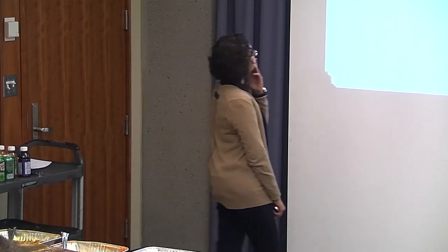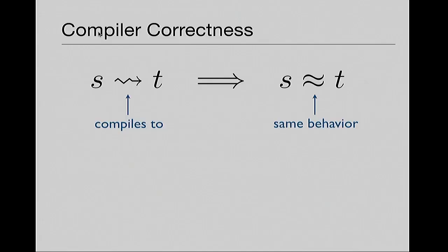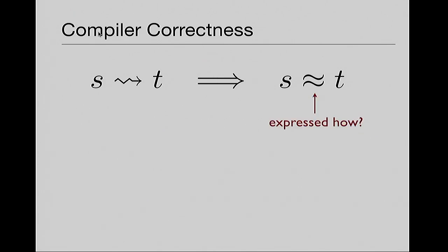So, compiler correctness. Please feel free to interrupt with questions — I love back and forth during the talk. If we have a source program S and we compile to a target program T, compiler correctness is about showing that S and T somehow have the same behavior. The whole question is: how do we express that S and T have the same behavior — that they're equivalent? If we just step back and talk about how we express this equivalence for whole programs: if you have a whole source program PS that you compile to a target program PT, then CompCert and the other papers specify compiler correctness as follows.